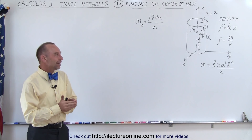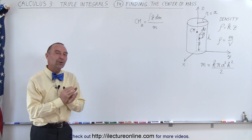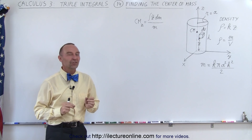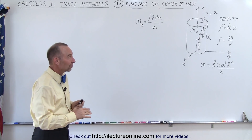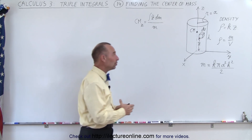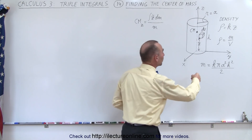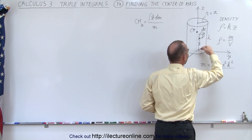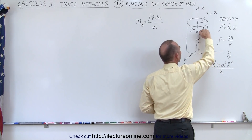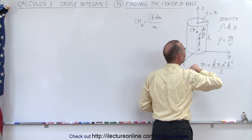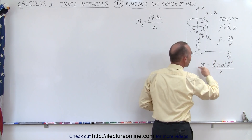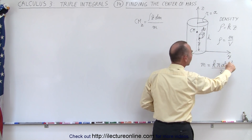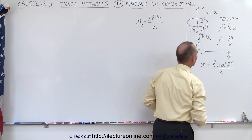Welcome to Electron Line. We're going to use the triple integral to find the location of the center of mass. We have the same cylinder used in the previous video. It had a variable density that increased as we went up in height. We found that the mass of the cylinder was equal to k pi a squared h squared over 2.